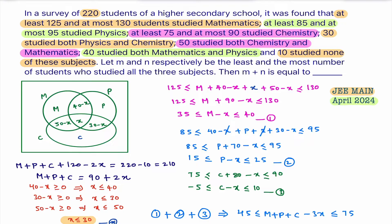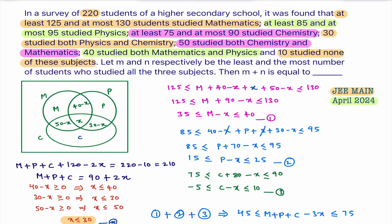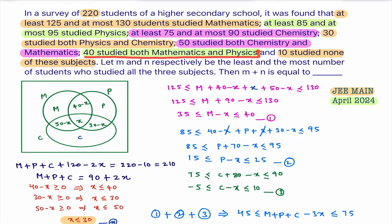There are 220 students in total and three subjects: Mathematics, Physics, and Chemistry. The data gives us students who study all three subjects, which I've taken as x. In the question, they've given that 40 students study both Math and Physics — so Math and Physics total is 40 students.